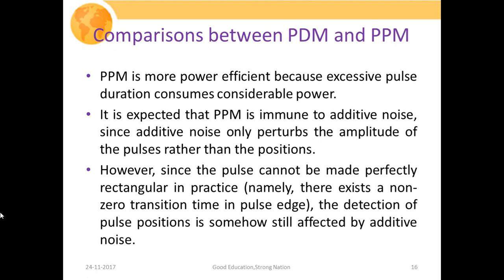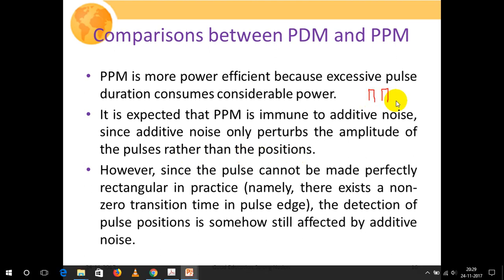This slide shows the comparison between pulse duration modulation and pulse position modulation. PPM is more power efficient because excessive pulse duration consumes considerable power — if pulse duration is high, more power is dissipated — whereas in PPM only a small pulse of fixed width is transmitted, so it is much more power efficient. PPM is also expected to be immune to additive noise since additive noise only perturbs the amplitude of the pulses rather than their positions.